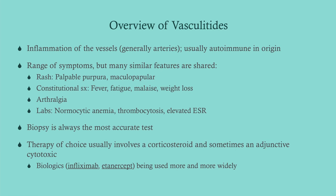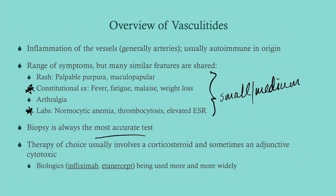This is our overview of vasculitides. The symptoms listed are primarily associated with small and medium vasculitis, so for the large vasculitides you won't see these too much — you'll encounter constitutional symptoms, possibly some lab disturbances and arthralgia. Biopsy is always the most accurate test because you're directly looking at inflamed vessels. Therapy usually involves a corticosteroid and sometimes an adjunctive cytotoxic like methotrexate.